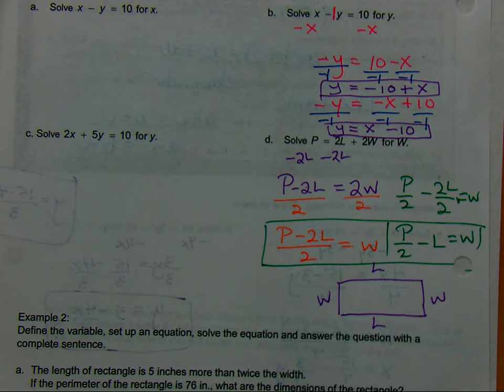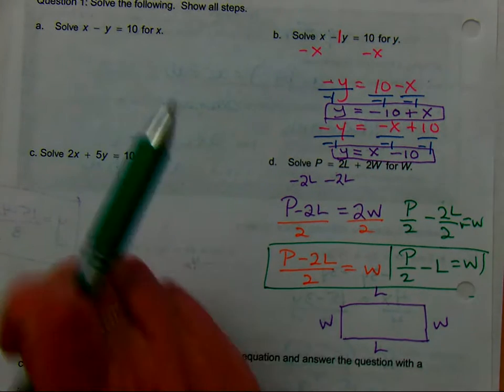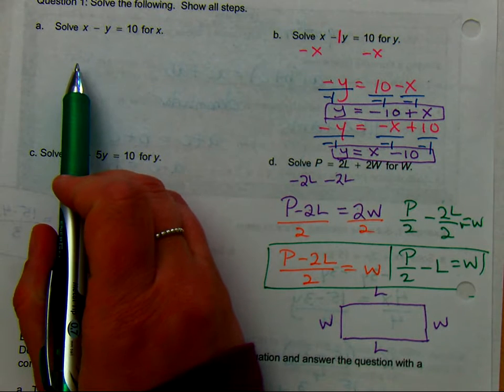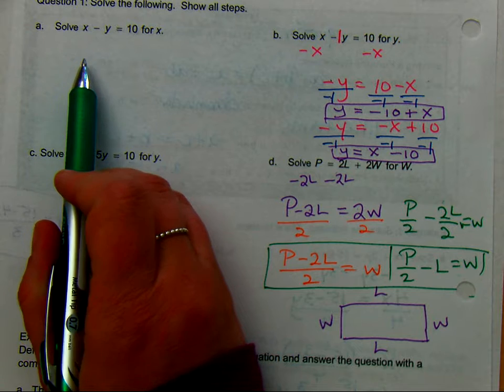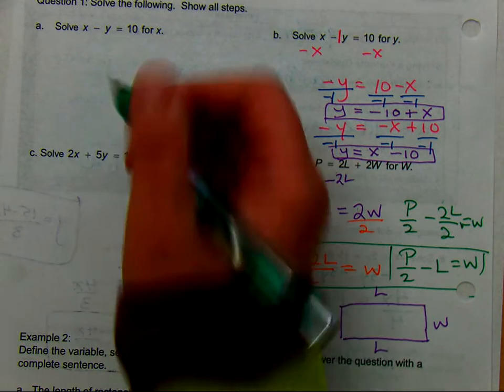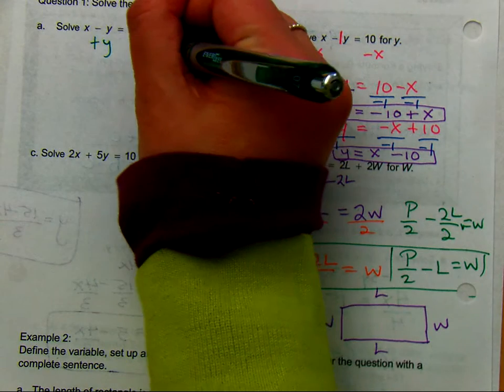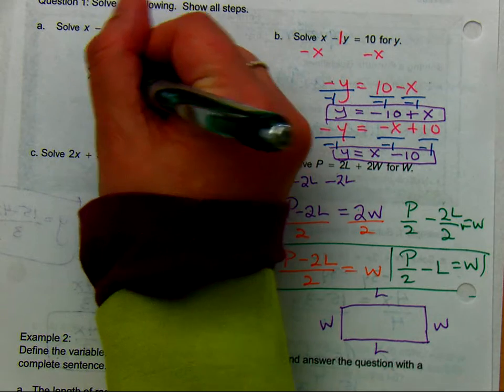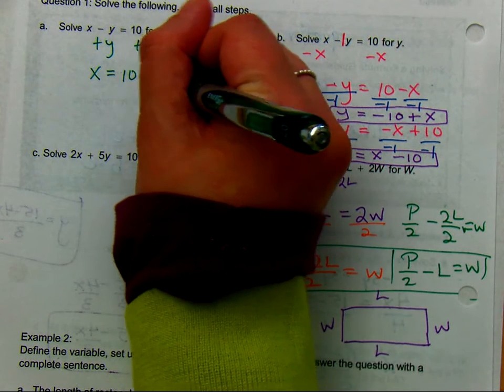Okay, let's share out on what we found. So what did you do in example A to solve for X? Add Y to both sides and you got X equals 10 plus Y, correct?